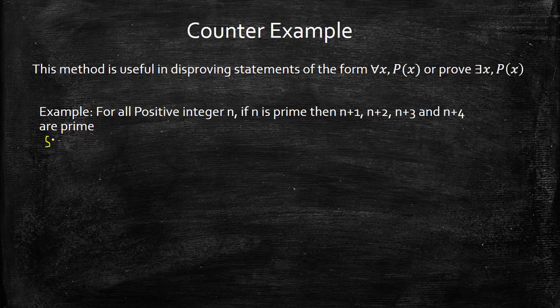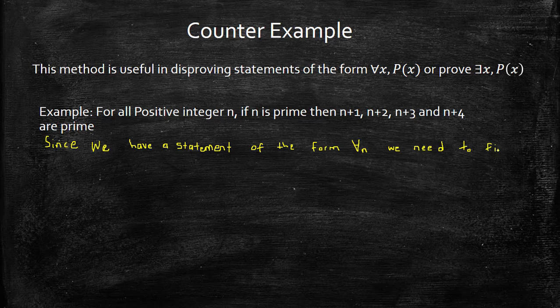What we need is one n which disproves the statement. Since we have a statement of the form for all x, we need to find an example which would make this statement false.